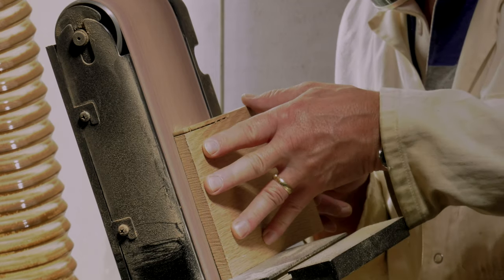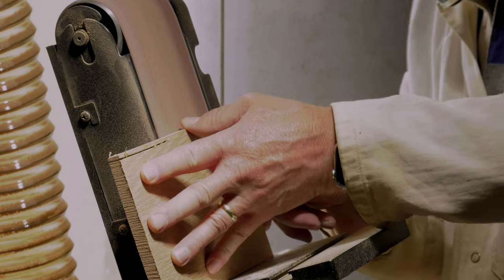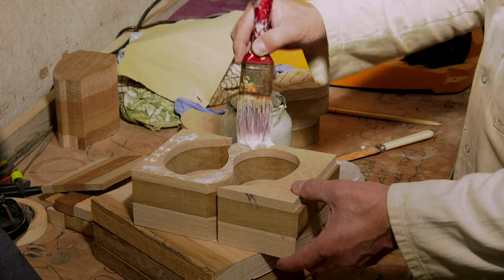The piece of wood saved for the back of the box is now lightly sanded and then glued and clamped in place.